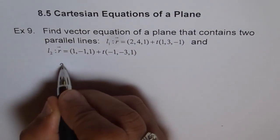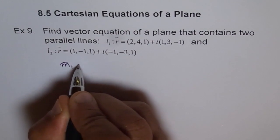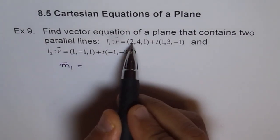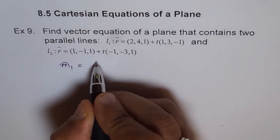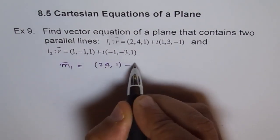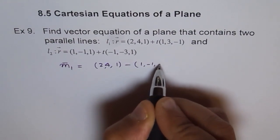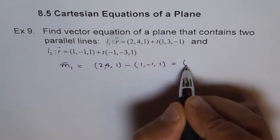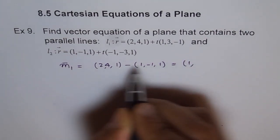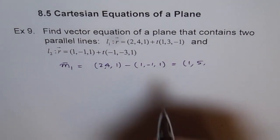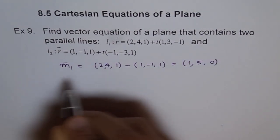So let's find the direction vector m1, which is between the given points 2,4,1. So we'll say 2,4,1 minus 1,-1,1. And what do we get? 2 minus 1 is 1, and 4 minus -1 becomes 5, and 1 minus 1 will be 0. So that's the other direction vector.